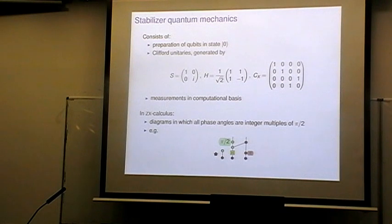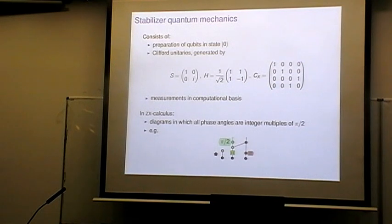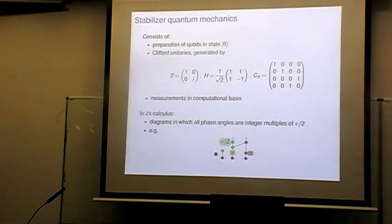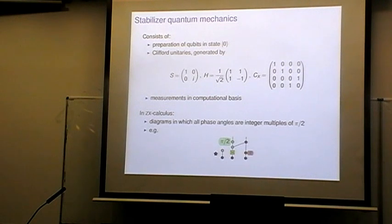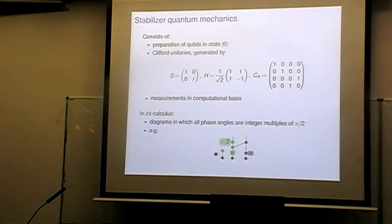In the ZX calculus, the stabilizer fragment is just the one where we allow the phase labels on our spiders to only be integer multiples of pi by 2. For the rest of this talk, when I have arbitrary labels in my diagrams, just assume they're always integer multiples of pi by 2. Conversely, any diagram in which all labels are integer multiples of pi by 2 corresponds to some stabilizer process.